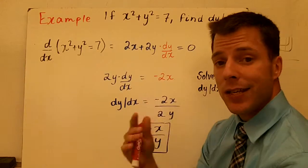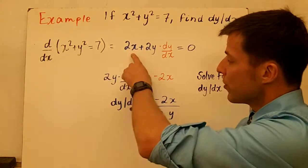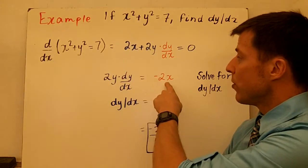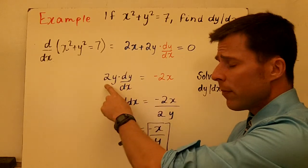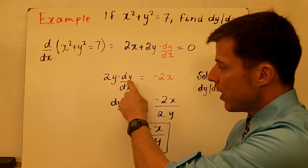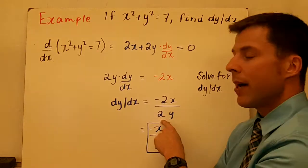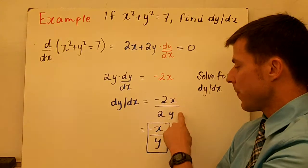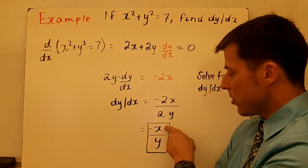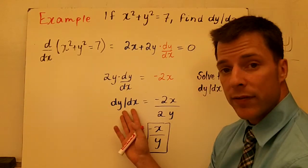I need to get dy/dx by itself so I can know what the derivative is. First thing I did is I subtracted 2x from both sides, so I'm left with 2y times dy/dx equals negative 2x. If I'm multiplying these two pieces together, to get dy/dx by itself I have to divide each side by 2y. I can simplify my 2s, which become negative 1 over 1, so I'm just left with negative x over y. And that's the derivative dy/dx.